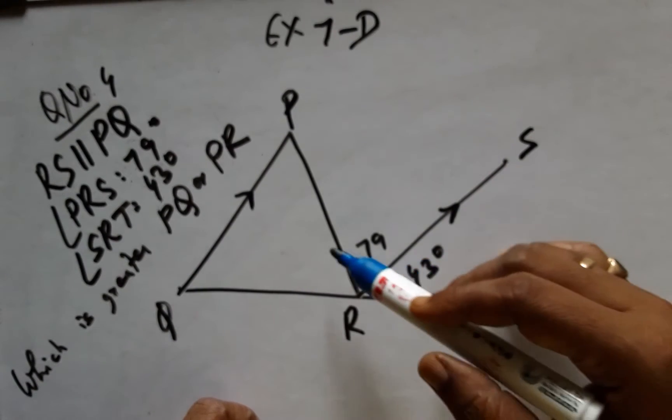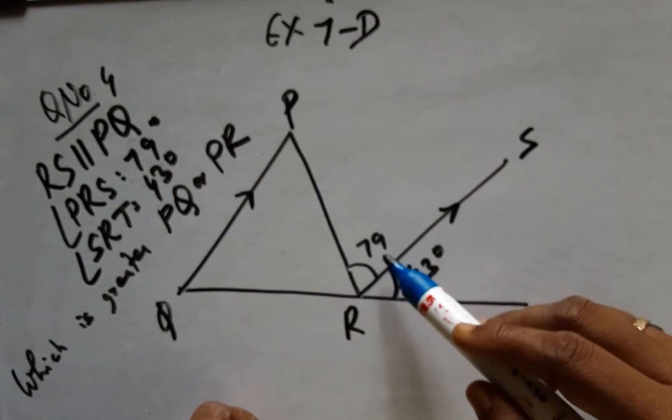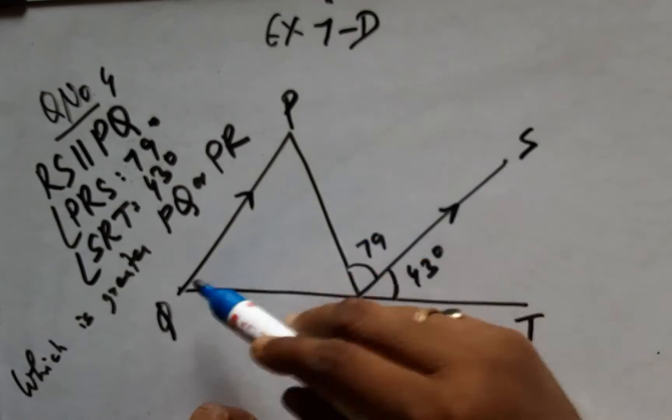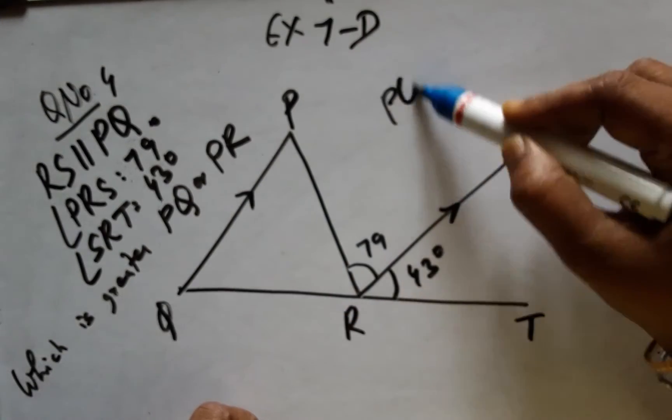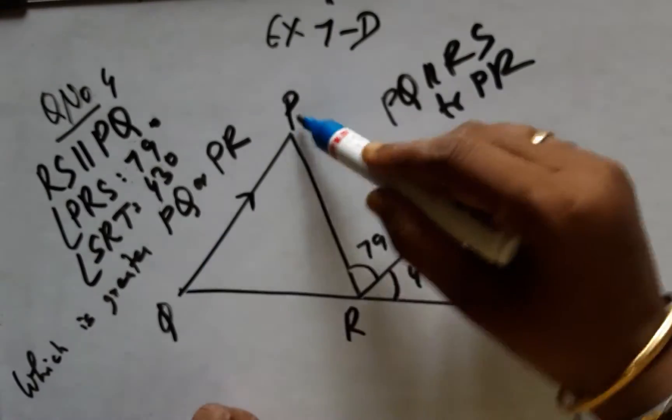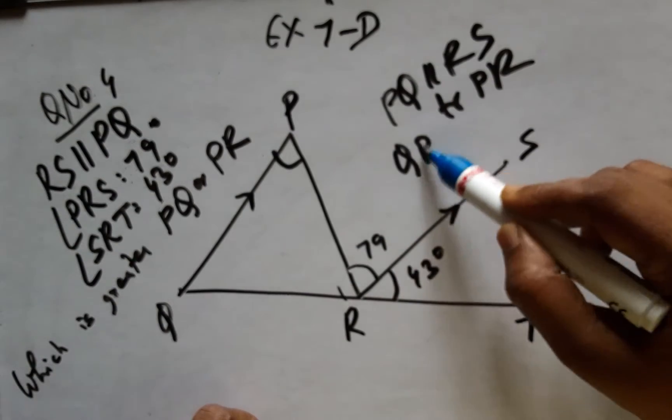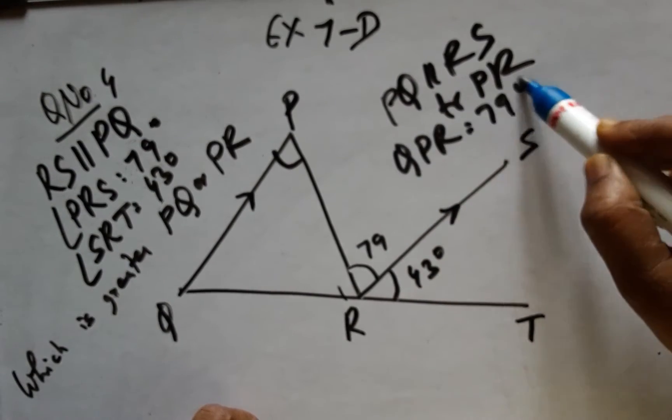We need to know which one is longer, given that this angle is 79 degrees. These two lines PQ parallel to RS with transversal PR form a Z formation, which states that alternate interior angles are equal. Therefore, angle QPR is also equal to 79 degrees.